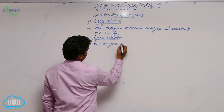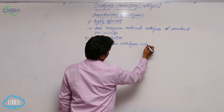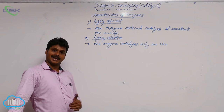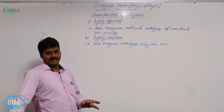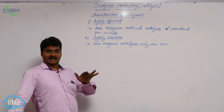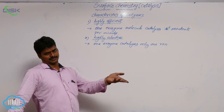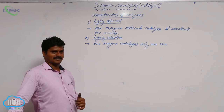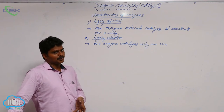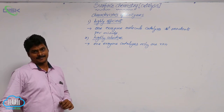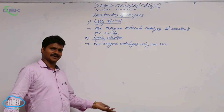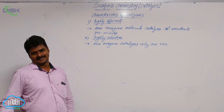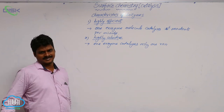Highly selective means one enzyme catalyzes only one reaction. For example, urease catalyzes the decomposition of urea only. It does not catalyze the conversion of sucrose into glucose and fructose — that is done by invertase. So urease and invertase have different actions; one enzyme catalyzes only one particular reaction.